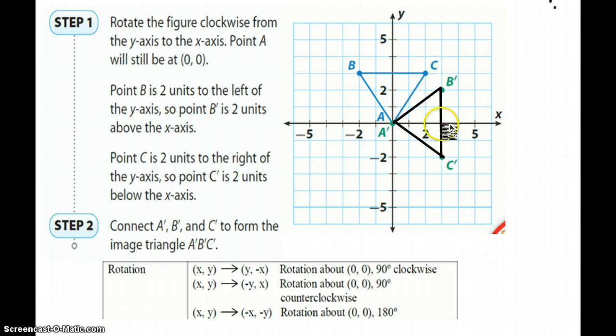Same thing with C. C is going to go down, but the thing about C, if x stays positive and y changes for 90 degrees clockwise, so if C is (2,3), then we're looking at rotating this thing to (3,-2). Point C is 2 units to the right, so C' is 2 units below the x-axis. Then connect, so that's what we've done.